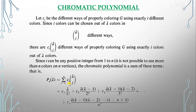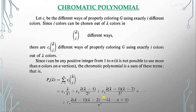When we put i=1 we get c_1 × λC_1, and λC_1 expands to λ/1!. When i=2 it becomes c_2 × λC_2, and λC_2 expands to λ(λ−1)/2!. Similarly, c_3 × λ(λ−1)(λ−2)/3!, and so on up to n terms. When i=n we get c_n × λ(λ−1)(λ−2)…/n!. This is the full representation of the chromatic polynomial.